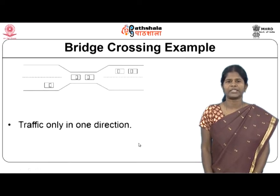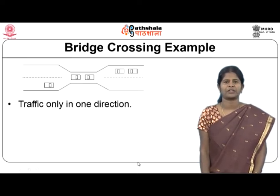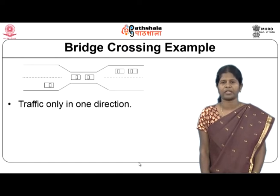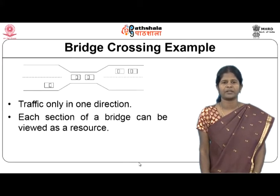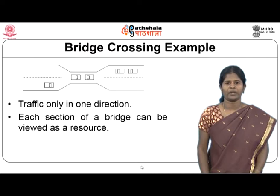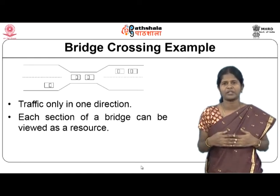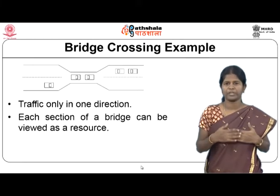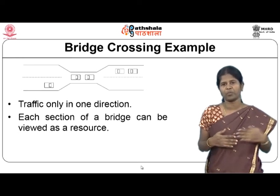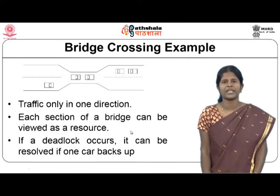Consider a bridge-crossing example: a bridge can be passed by only one vehicle at a time, and traffic can move in only one direction. Each section of the bridge can be viewed as a resource. If vehicles come from the left and right simultaneously, both try to cross, meet in the middle, and find they cannot proceed further. This results in a deadlock.